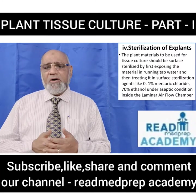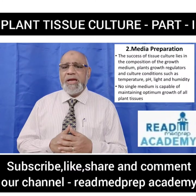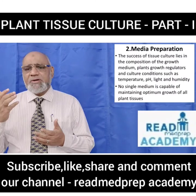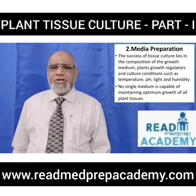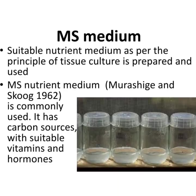The success of tissue culture lies in the composition of the growth medium, plant growth regulators, and culture conditions such as temperature, pH, light, and humidity. No single medium is capable of maintaining optimum growth of all plant tissues. The MS medium (Murashige and Skoog medium), prepared in 1962, is commonly used; it contains carbon sources, suitable vitamins, and hormones.